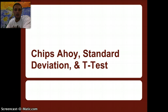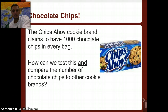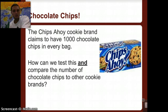We're going to do that by performing an experiment with chocolate chip cookies — Chips Ahoy. Chips Ahoy claims to have 1,000 chocolate chips in every bag. We're going to test this by comparing the number of chocolate chips in an individual cookie and comparing that to a different brand to see if one brand has more than another.